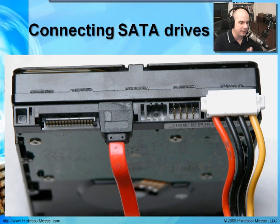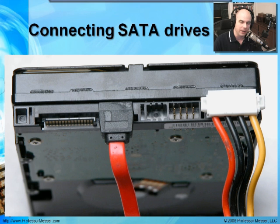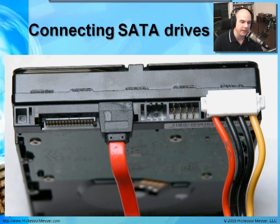When connecting the SATA drive, plug in the SATA data cable — notice it's keyed, so you can't plug it in upside down. It only goes in one way, which is helpful when you're working inside a cramped machine. The power connection is also keyed — you cannot plug power in the wrong way. If it's really hard to plug in, you're likely doing it wrong. Do not force anything on the back of these drives; they're keyed to slide in very easily. And now your SATA drive is plugged in — it's that simple.